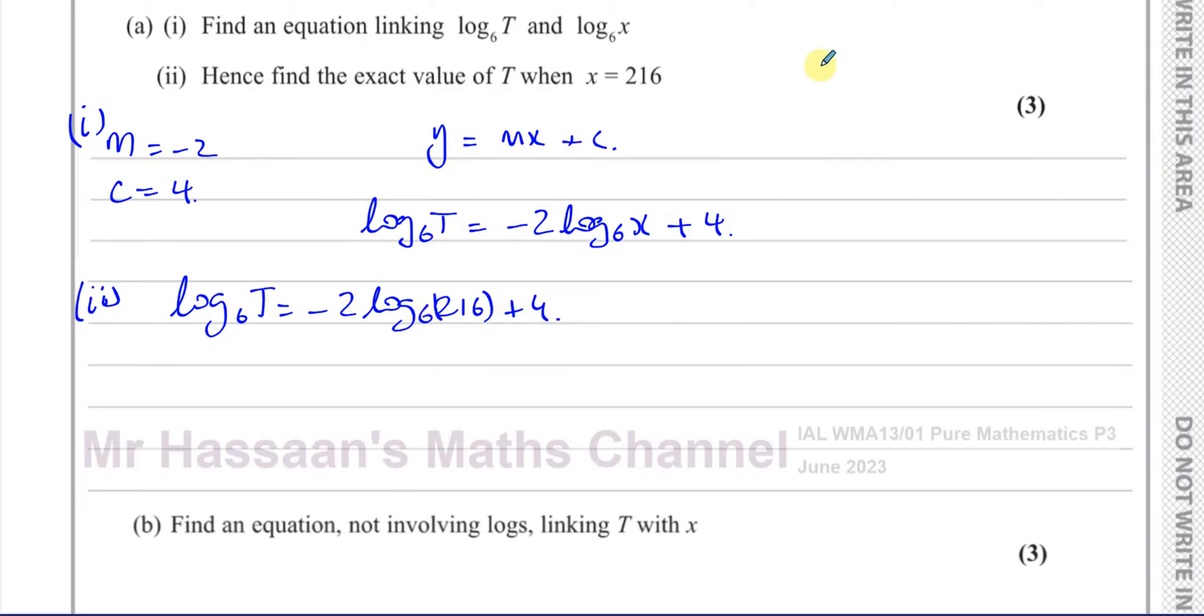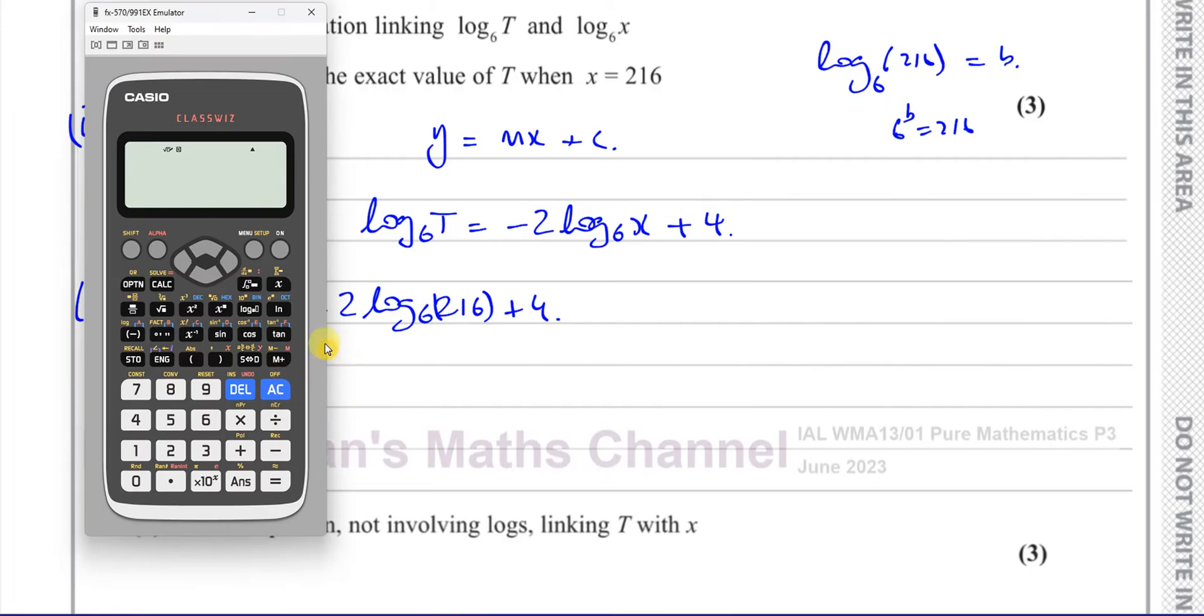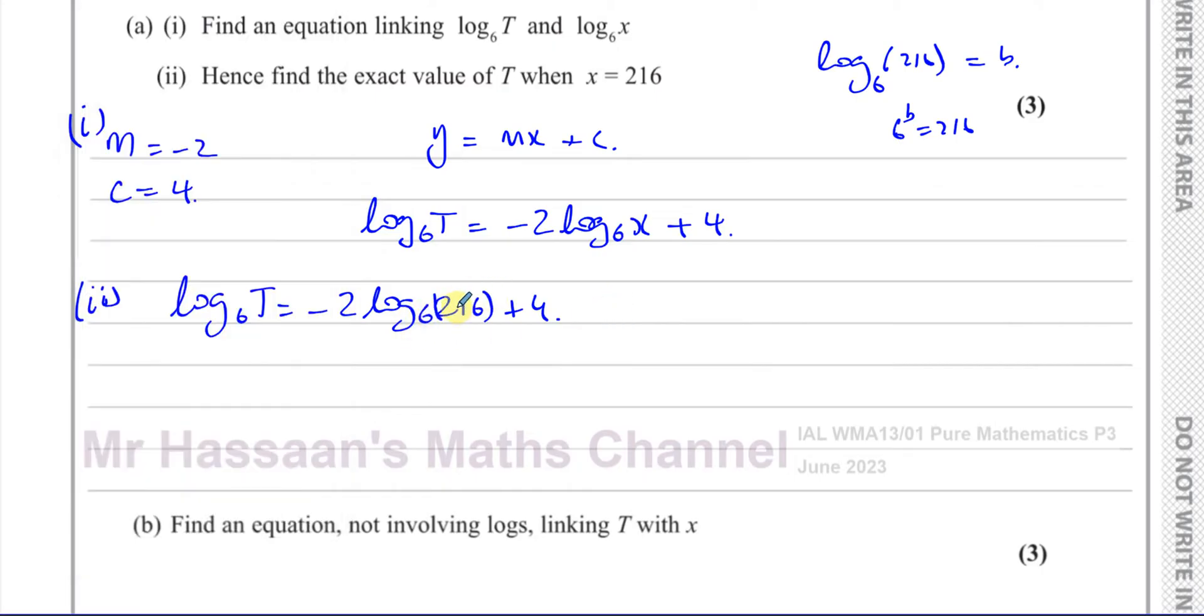Now I know that log to the base 6 of 216 is equal to something. This is the power that you raise 6 to to get 216. 6 to the power of B equals 216. I know that this is 6 cubed. If you're not sure about that, you can just put it in your calculator. You can say, log to the base 6 of 216, and it's going to come out as 3. So we're going to say that log base 6 of T equals minus 2 times 3 plus 4. Minus 6 plus 4 is minus 2. So log base 6 of T equals negative 2.